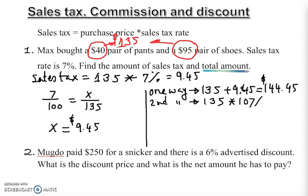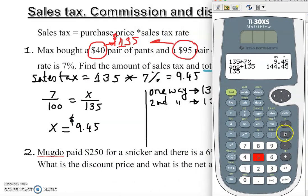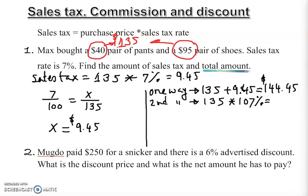The second way: instead of adding separately, you can multiply $135 by 107%. This gives you exactly the same answer — $144.45. It's a shortcut that combines both steps into one. So you can use either method depending on whether it's an algebra class — use proportions — or a basic arithmetic class — just multiply.